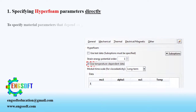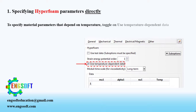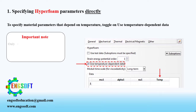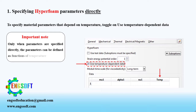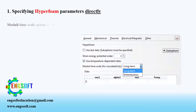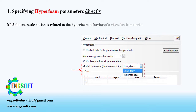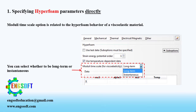To specify material parameters that depend on temperature, toggle on use temperature-dependent data. Then a column labeled as temp appears in the data table. Important note: only when parameters are specified directly can the parameters be defined as functions of temperature. The moduli timescale option is related to the hyperfoam behavior of a viscoelastic material. You can select whether to be long-term or instantaneous.